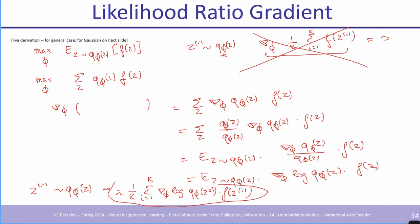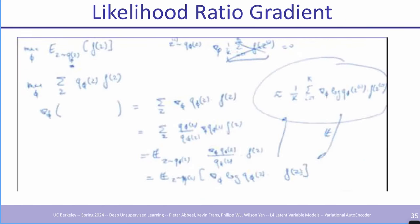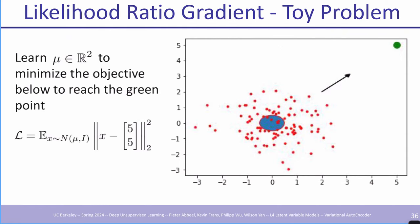As a very simple example, we'll apply the likelihood ratio gradient to a toy problem: a distribution with unknown mean mu and unit variance.